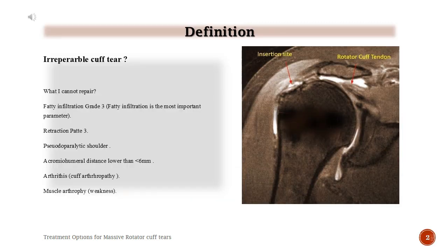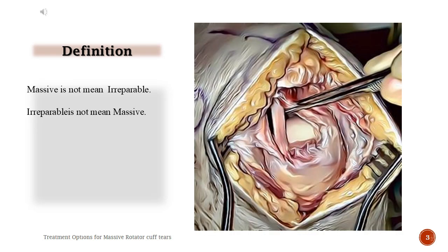Definition — what makes a tear irreparable: Fatty infiltration Grade 3 (the most important parameter), retraction pattern Grade 3, severe or paralytic shoulder, acromio-humeral distance lower than 6 mm, arthritis, cuff arthropathy, muscle atrophy, and weakness. Importantly, massive does not mean irreparable, and irreparable does not mean massive.